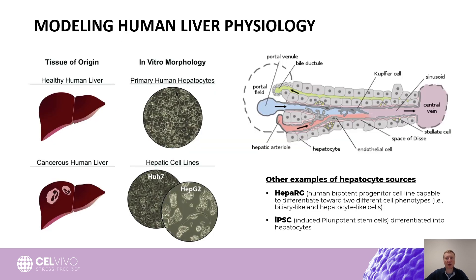If we would like to model human liver physiology using models derived directly from humans, we generally think about using hepatocytes as the main building block. We can use primary cells or immortal cell lines; however, a factor that has been overlooked for a very long time is tissue structure and the specificity of cellular organization.